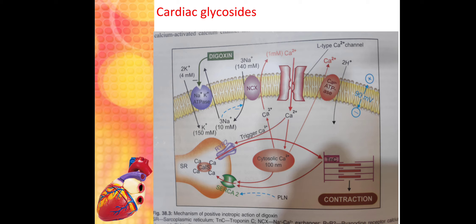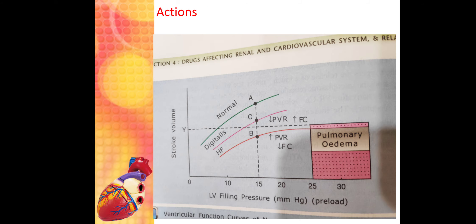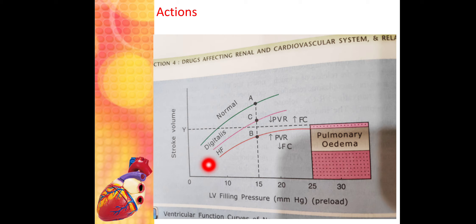First, let's look at the action of cardiac glycosides on various organs, starting with the heart. Here you can see a curve graph plotting left ventricular filling pressure against stroke volume. This is the normal curve, according to Frank-Starling law, which states that as filling pressure increases, stroke volume rises — up to a fixed pressure of about 20 mmHg.